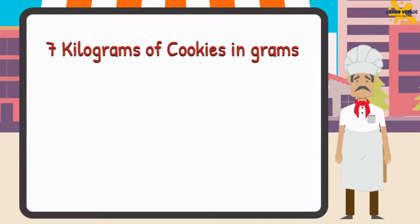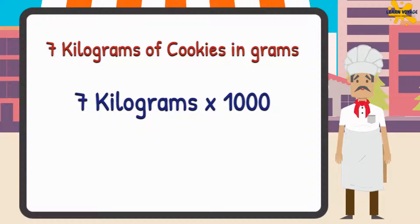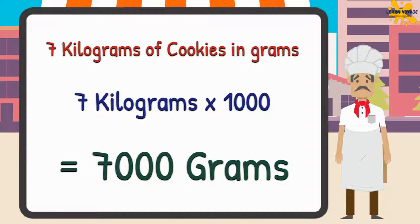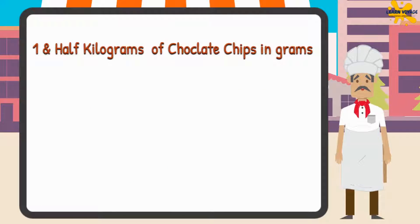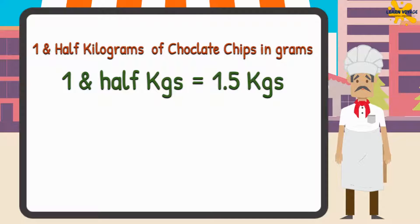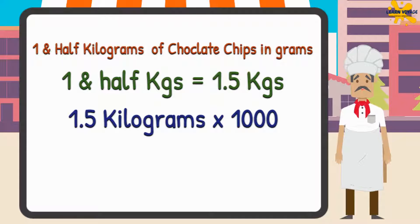How much are 1 and a half kilograms of chocolate chips in grams? Multiply 7 kilograms with 1000 to get the value in grams. The correct answer is 7000 grams. For 1.5 kilograms, if we multiply it with 1000, you should get 1500 grams.